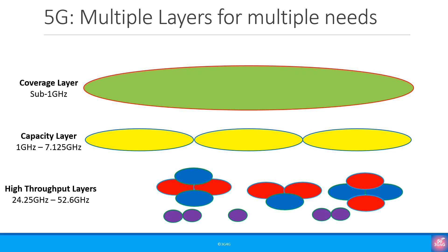The coverage layer comprises of frequencies below 1 GHz or 1000 MHz. The capacity layer comprises of frequencies in the range above 1 GHz and below 7.125 GHz.